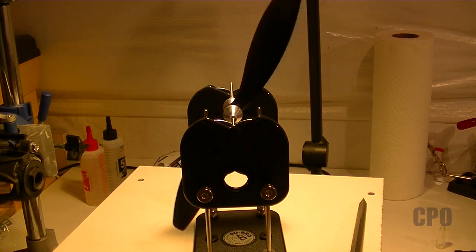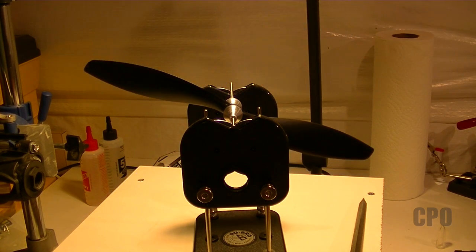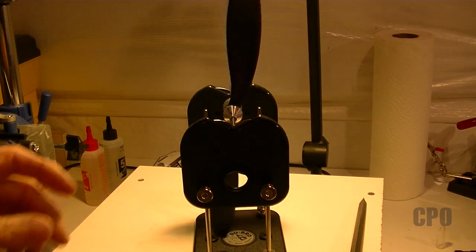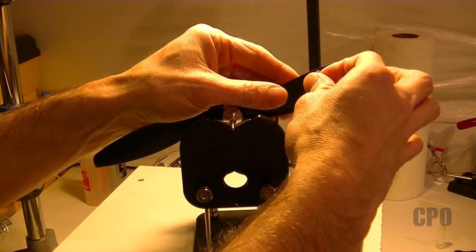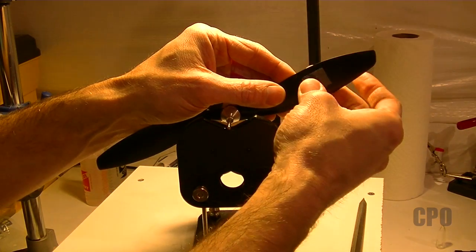So for this particular prop, I'm going to start with the blades, getting them as balanced as I can. Adding tape to the light one until I can sort that out. Then I'll work on the hub.